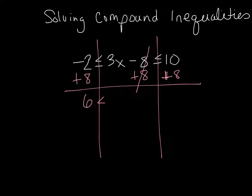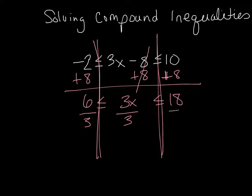That cancels out and I get 6 is less than or equal to 3x is less than or equal to 18. If you struggle with this, it might actually help to draw the lines like I did so you can actually see that you did it on the inside and the two outsides. Then I have to get rid of the three, so I divide everything by three on all sides, and I get 2 is less than or equal to X is less than or equal to 6.